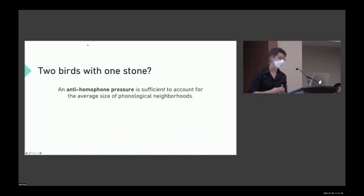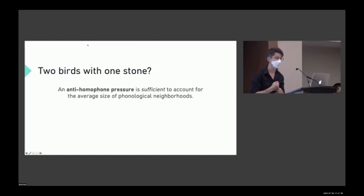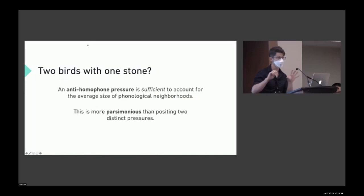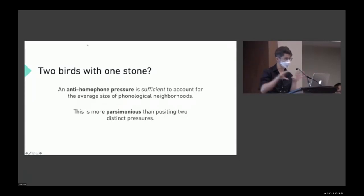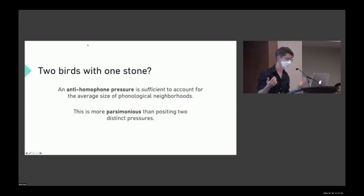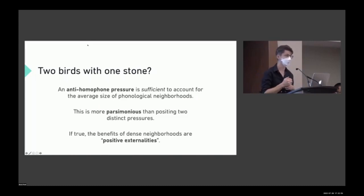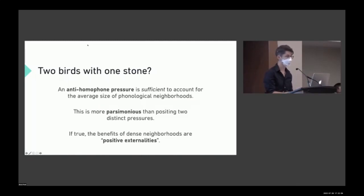The question we started with was whether an anti-homophony pressure would be sufficient to account for average neighborhood sizes. What we find is that it seems to be, in large part — and that is more parsimonious than positing two distinct pressures. Rather than having both a pro-neighborhood pressure and an anti-homophony pressure to explain two different things, one pressure appears able to explain both. The benefits of dense neighborhoods for learning and production remain, but under this account they are positive externalities or byproducts of the anti-homophony process.